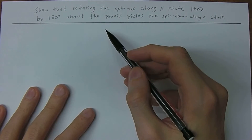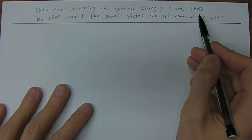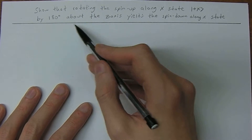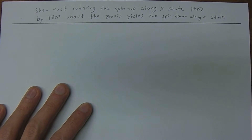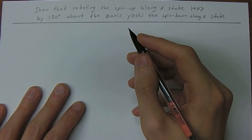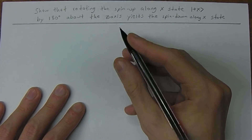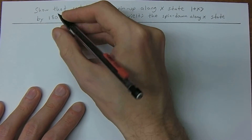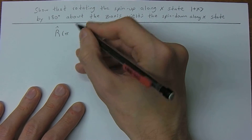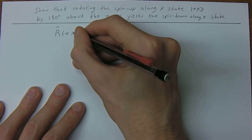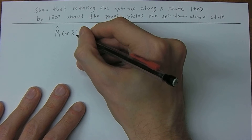We're going to start discussing rotation operators. We want to show that rotating the spin-up along x state — the plus-x ket — by 180 degrees about the z-axis yields the spin-down along x state. To rotate a vector, we need to use an operator, denoted with a hat. We want to rotate by pi counterclockwise around the z-axis.